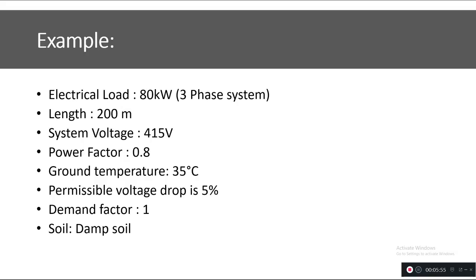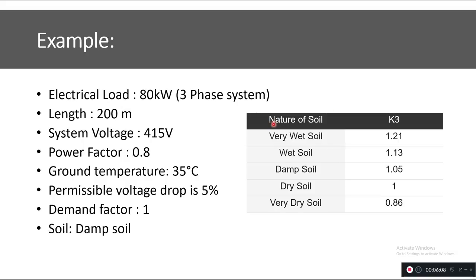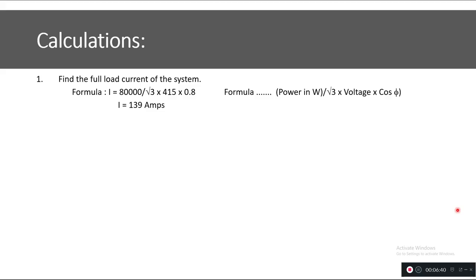If you don't have the thermal resistivity of the soil, you can refer to the chart shown on screen and select the factor according to your soil type. Now, calculating the full load current: using 80 kW, power factor 0.8, and 415 V in the three-phase formula P = √3·V·I·cosφ, the full load current is 139 A. You need to select a cable capable of carrying 139 A.